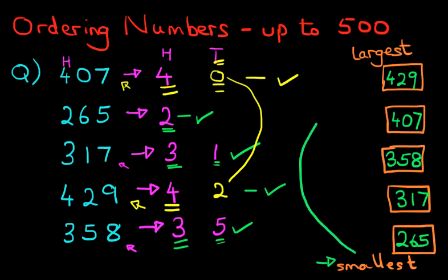Four hundred and twenty-nine is the largest number. What we have done is gone from the smallest up to the largest, reordering all five numbers. The first at the bottom is two hundred and sixty-five, which only had two hundreds. The next two both had three hundreds, so we had to go to the tens to work out which was larger and which was smaller. The last two at the top had four hundreds, so we again looked at the tens. That is how we order numbers up to five hundred, starting from the largest going down to the smallest.